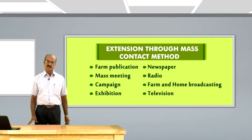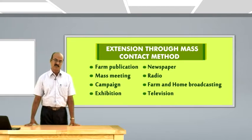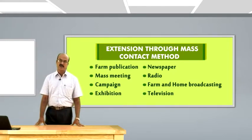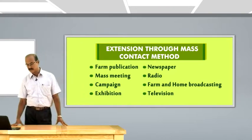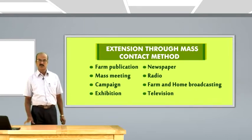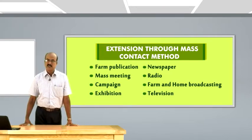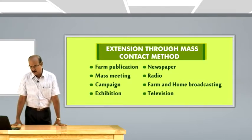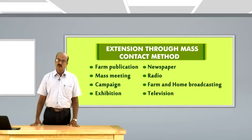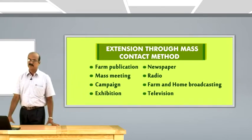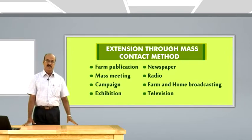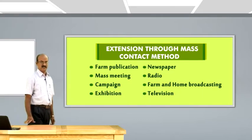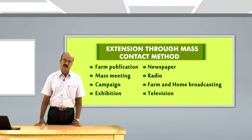Radio is a mass medium, but whatever information is delivered through radio may not meet the requirements of the larger population, as site-specific recommendations are not possible through radio or television. Television is both audio and video but requires planned viewing. Farm and home broadcasting is taken up through community radio with a limited coverage of around 50 to 70 kilometers radius, and every radio program has specific or unique programs to satisfy the requirements of the audience.